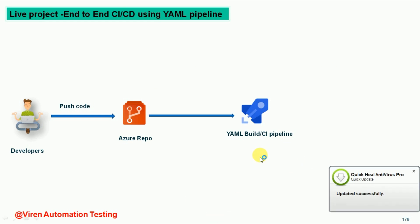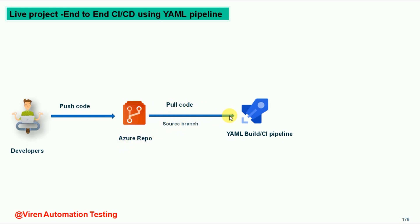Once you understand all the design methods and steps to implement the CI/CD pipelines, you can easily design your pipelines with YAML. Once our pipeline is ready in YAML format, we can pull the code from the Azure Repository. We need to specify the branch — there are multiple branches like the master branch or individual developer branches. As a source branch I am using the master branch configured for this project, and then we pull the code into the YAML CI/CD pipeline.